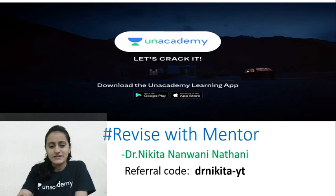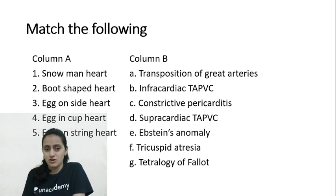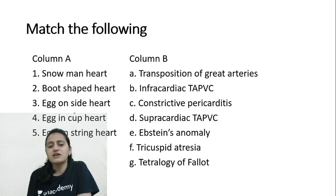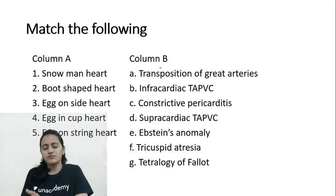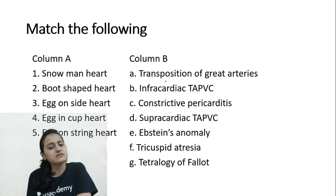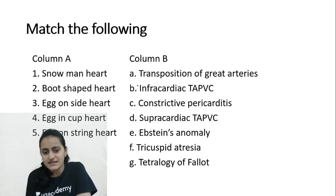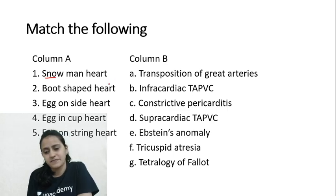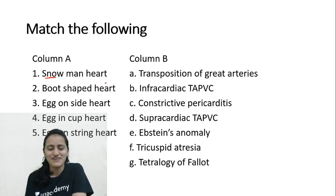The first pattern of question we'll see - very high chances of being asked - is match the following. In Column A you have different appearances of the heart on chest X-ray and in Column B the associated conditions. In AIIMS match-the-following, the left column has say five items and the right column has more than five, just to confuse students. The first one is snowman heart.